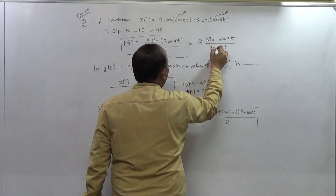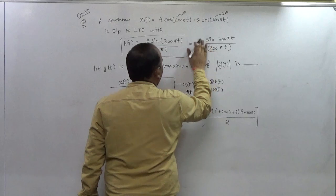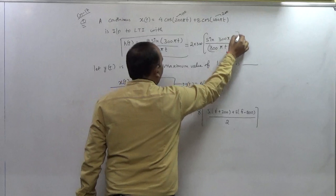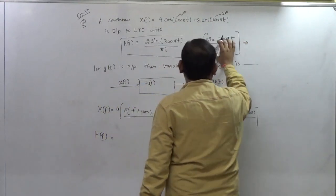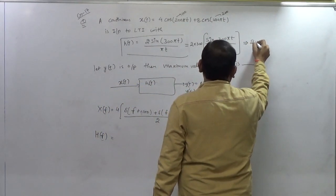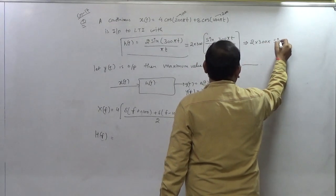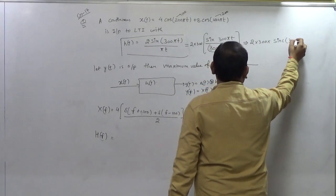So we can write this particular part because it is the definition of sinc, 2 into 300 and this one is the sinc function but in the form of 300t.